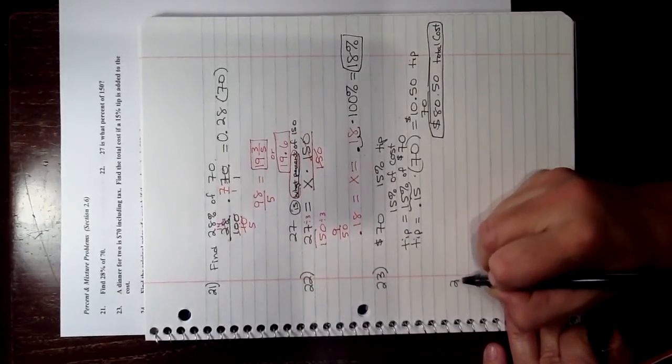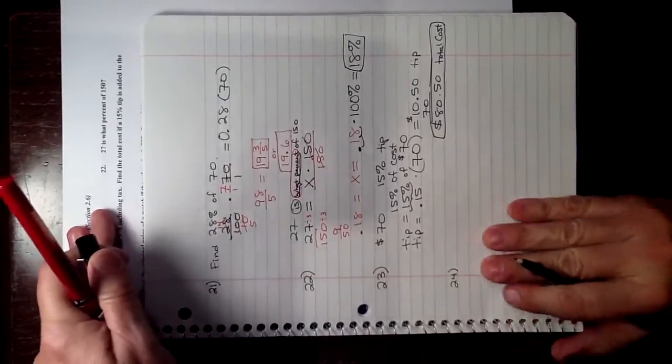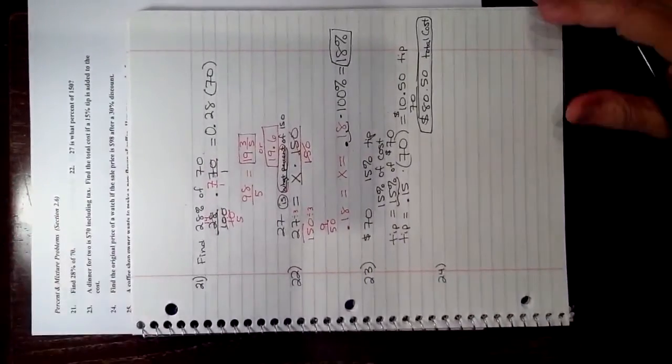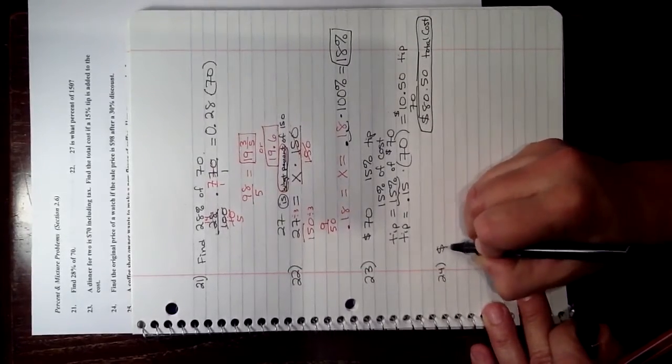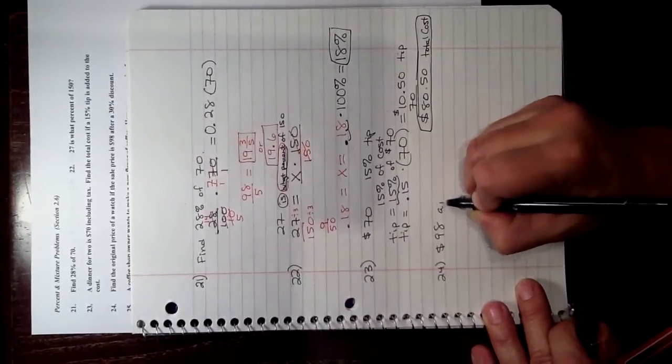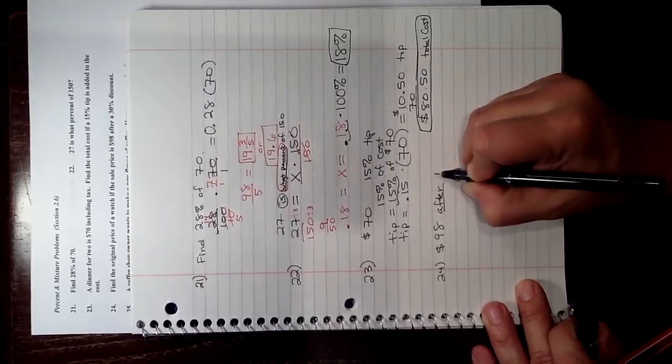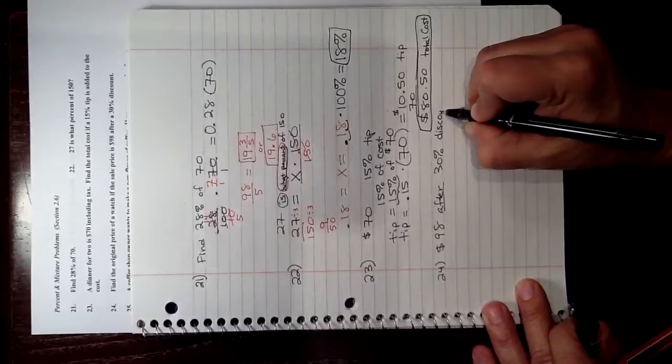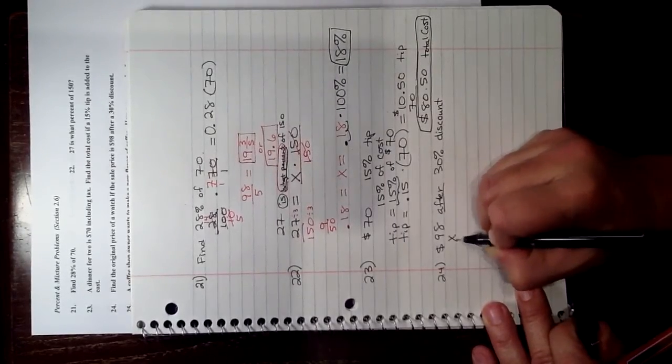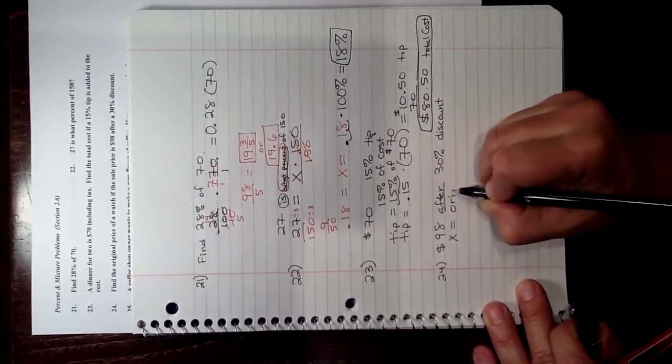On number 24, we have find the original price of a watch if the sale price is $98 after a 30% discount. So the question, once again, is find the original price of the watch.